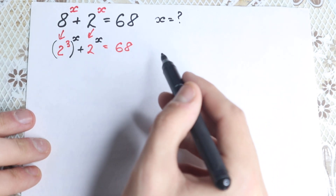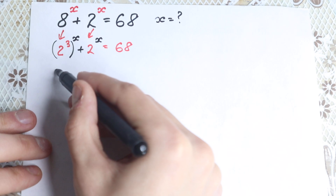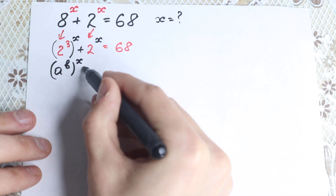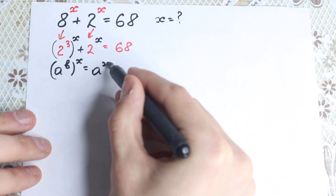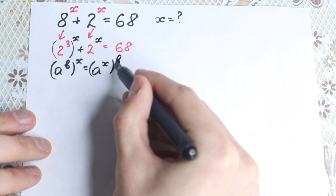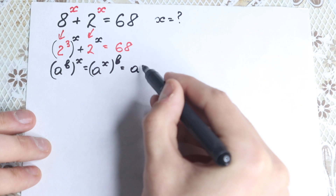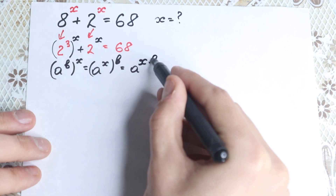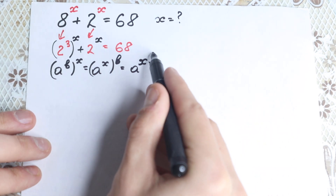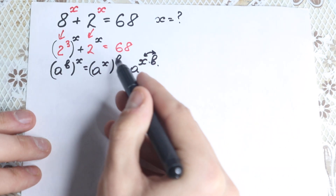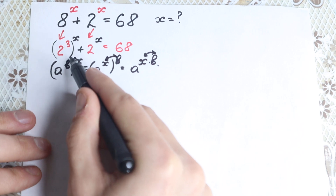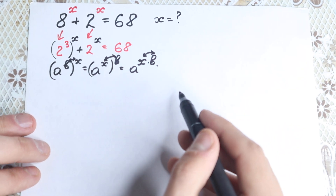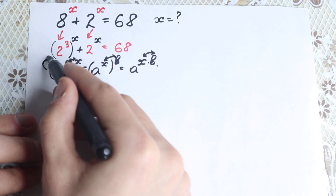We need to know a really important rule of interchange. If we have a to the power b, raised to the power x, it can be written as a to the power x, raised to the power b. Why? Because both equal a to the power x times b — it's a product, so we can swap these two exponents. This is really important and great.